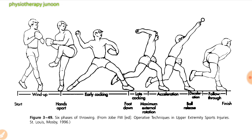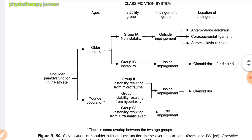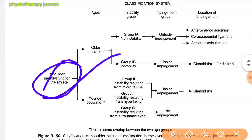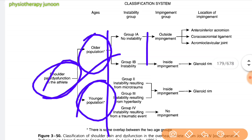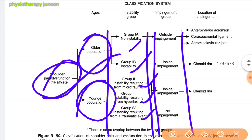We start with the classification system. Shoulder patients are categorized by age — functioning athlete, older population, or younger population. They are then divided into instability groups: Group IA, Group IB, Group II, Group III, and Group IV. We also classify by outside or inside impingement or no impingement, and further classify according to the location of impingement.